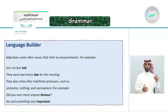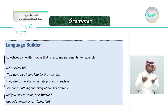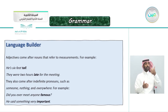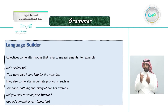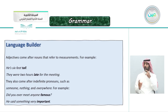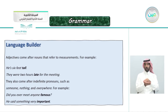Here's a language builder: adjectives come after nouns that refer to measurements. For example: 'He's six feet tall.' 'They were two hours late for the meeting.' They also come after indefinite pronouns such as someone, nothing, and everywhere. For example: 'Did you ever meet anyone famous?' 'He said something very important.'